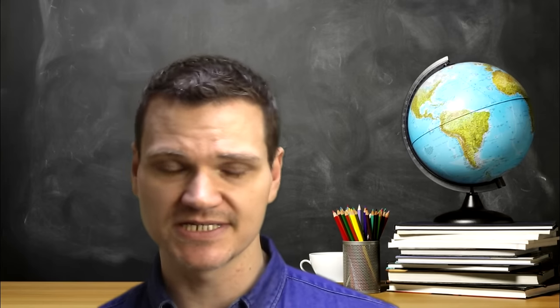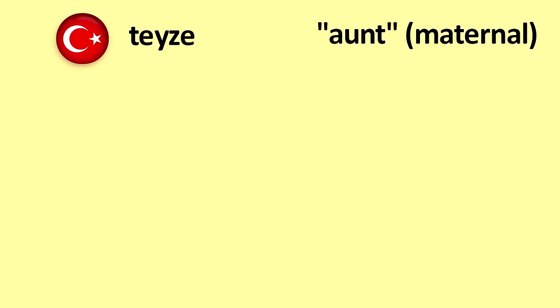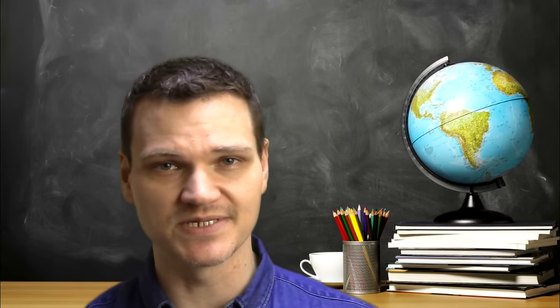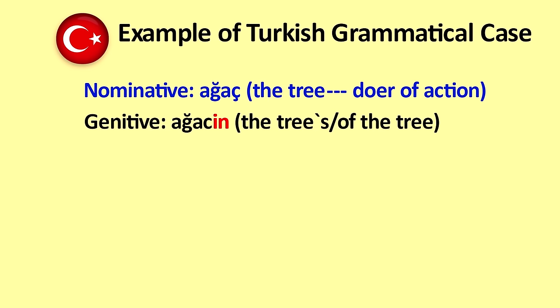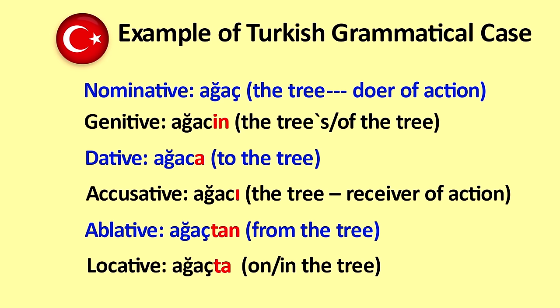By adding a piece to the end of a word, you add to its meaning. This way of attaching suffixes is also used to make plural forms, possessive forms, and to show grammatical case for nouns. There are six grammatical cases in Turkish — the form of the noun changes depending on its function in the sentence. For example, using the word for 'tree,' you can see how that noun changes form depending on what function it fulfills in the sentence.